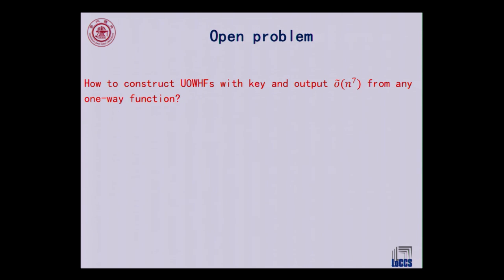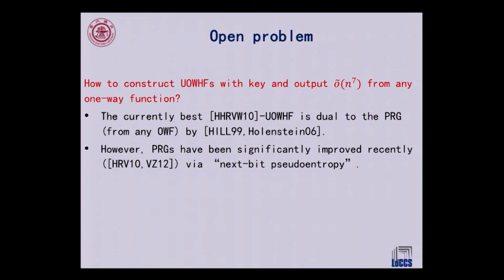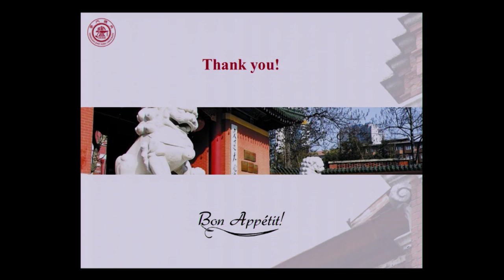To conclude, we still have not solved the problem of constructing woofs from any one-way function with better efficiency than the current best-known construction, which is comparable to PRG constructions from ten years ago. The PRG has since been improved, so the open question is whether we can efficiently construct woofs using a dual technique to recent PRG constructions. Despite the symmetry and duality, there are complications that make this challenging. That's it — bon appétit and thank you.